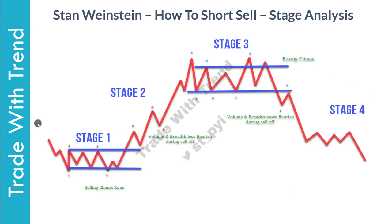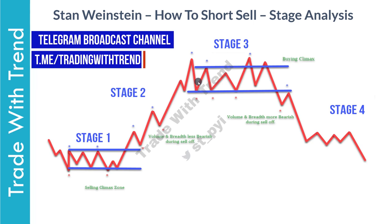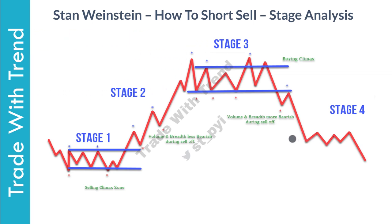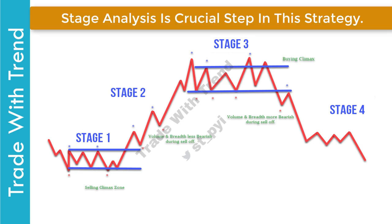In part one, we had seen that Stan Weinstein recommends buying stocks that are coming out of stage one and transitioning into stage two. For short selling, Stan Weinstein recommends focusing on only those stocks that are moving from stage three to stage four. This concept of identifying stages within a stock is something Stan Weinstein recommends throughout his book. As a rule of thumb, whether you want to buy or short a stock, always begin by conducting stage analysis on it.